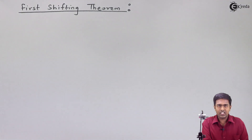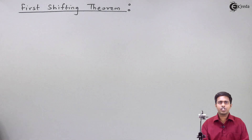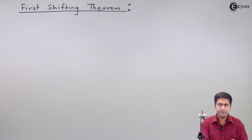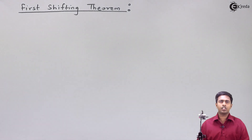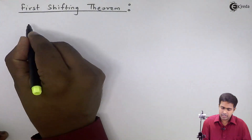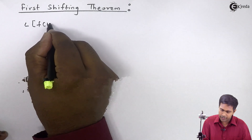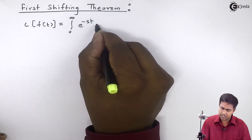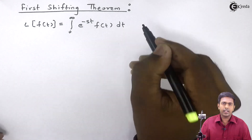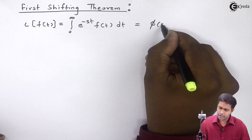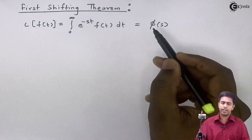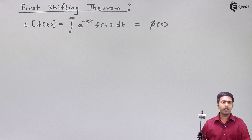Let's understand one more property of Laplace transform, which is called the first shifting property or first shifting theorem. To understand it, let's start with the definition of Laplace transform. We know that the Laplace transform of f(t) is given by the integration from 0 to infinity of e raised to minus st times f(t) dt, which is called phi of s, because this integration gives us a function of s.